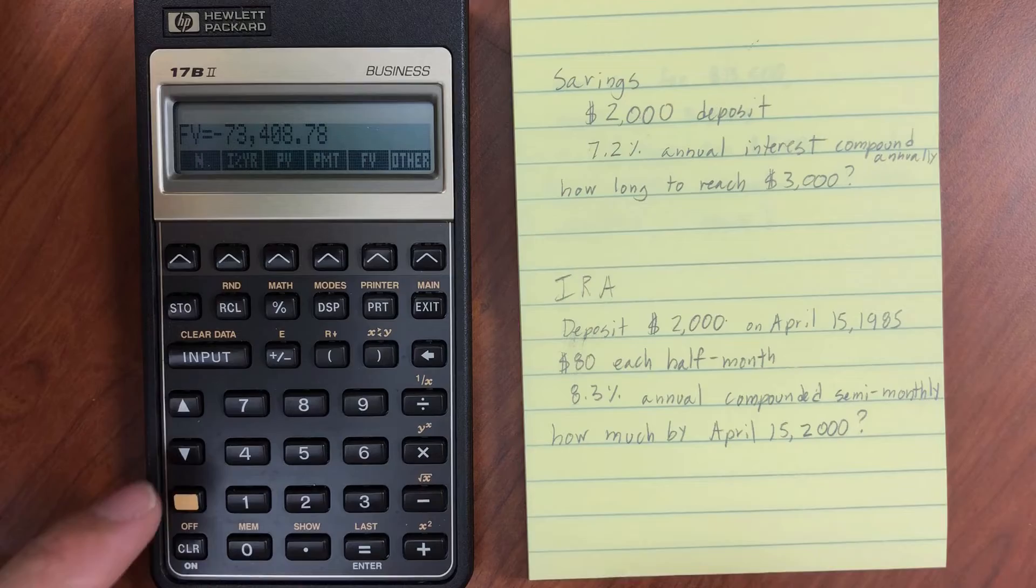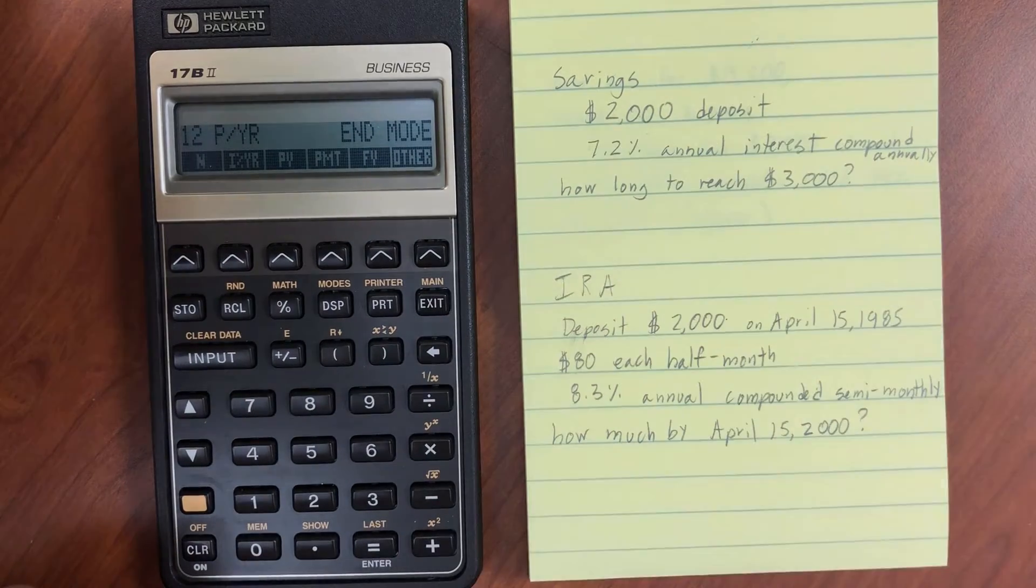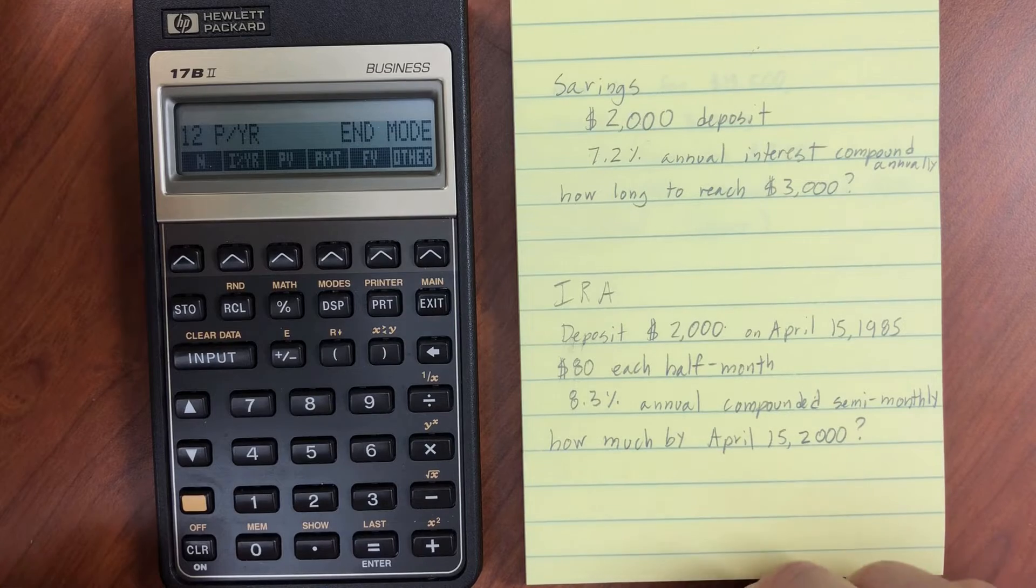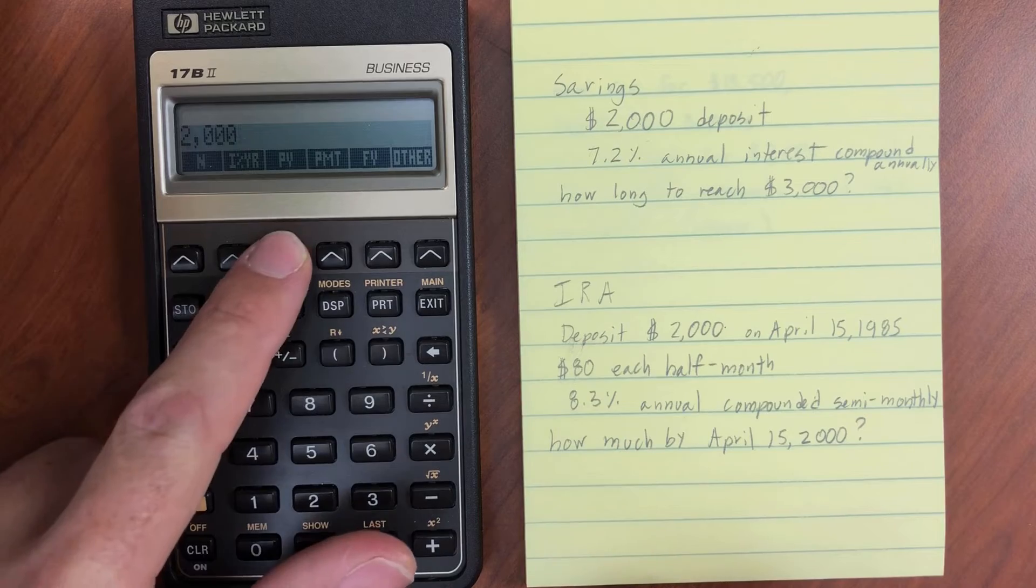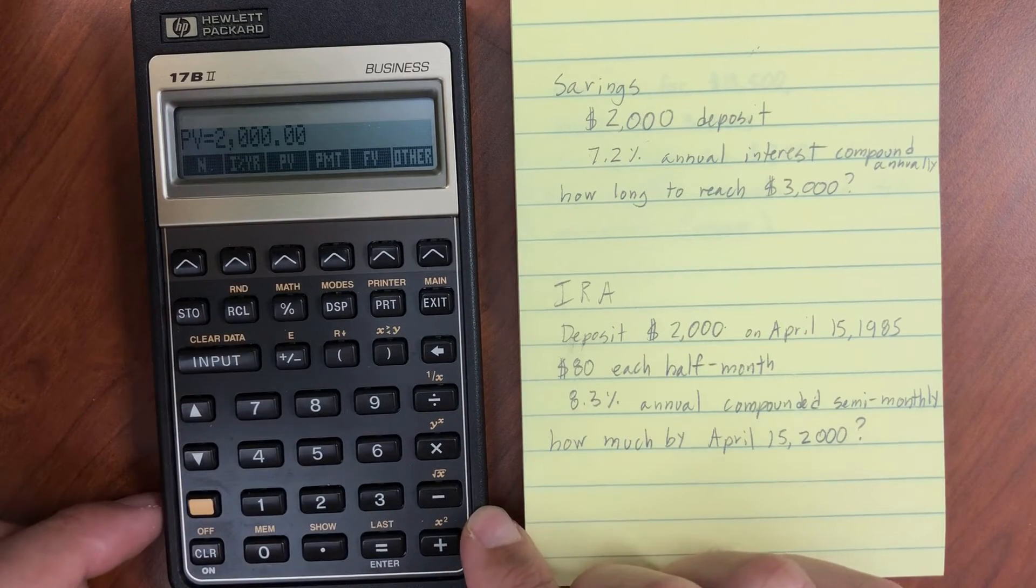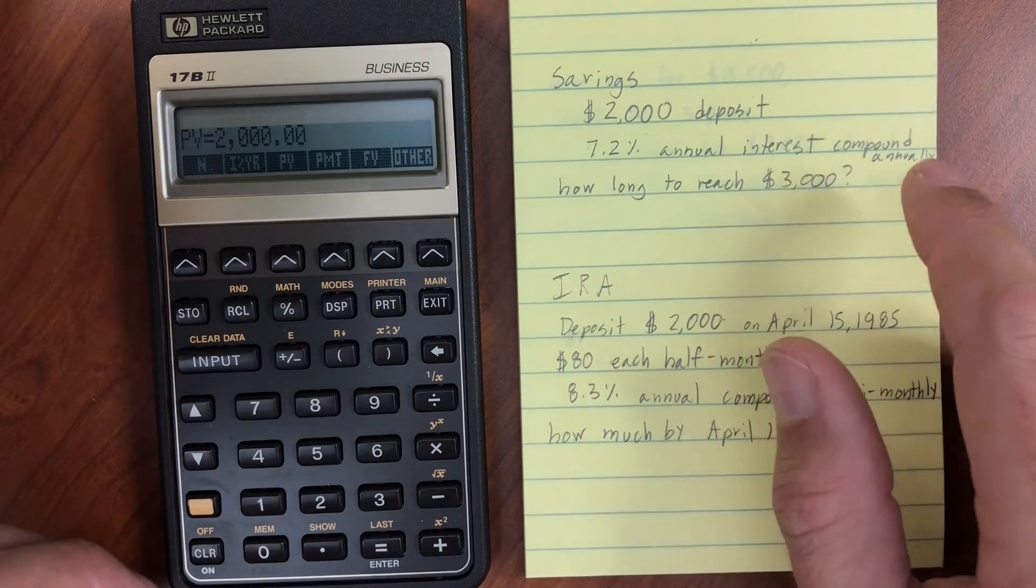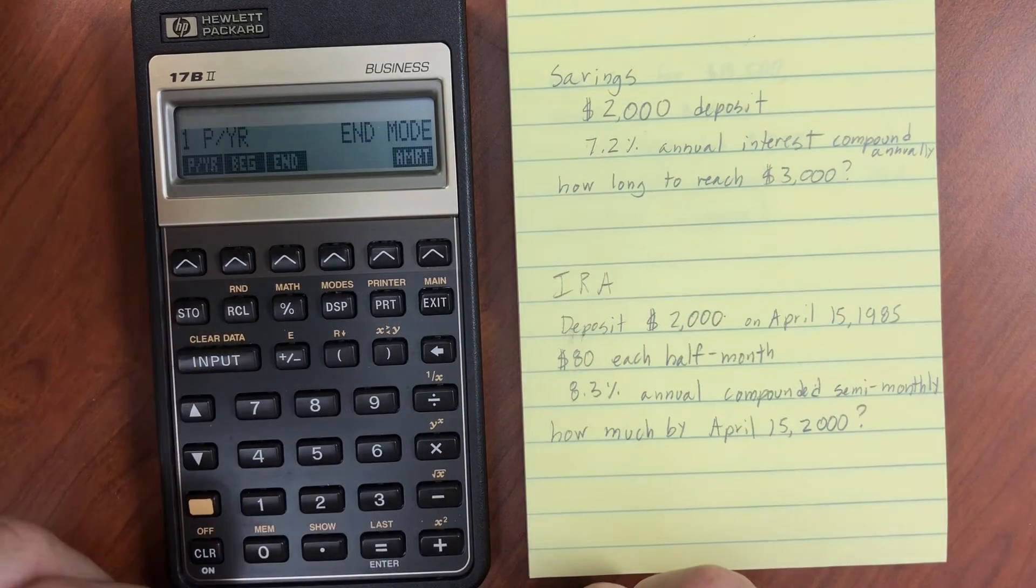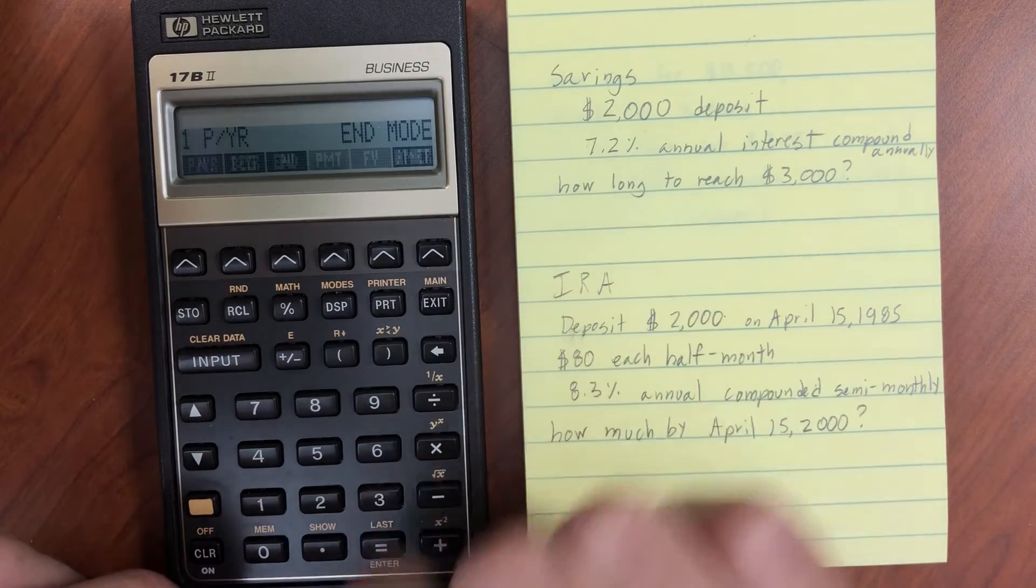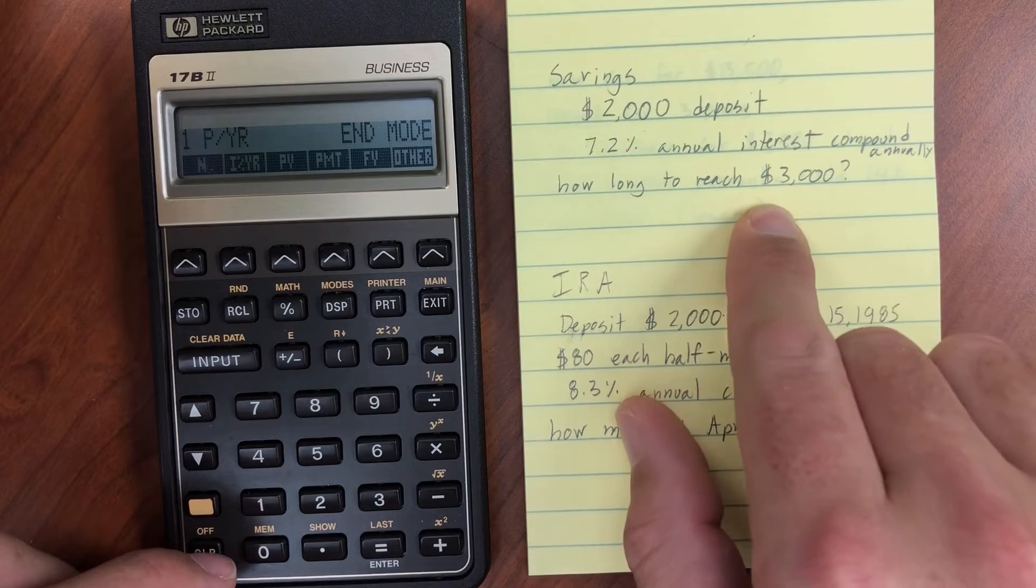We've got another example. Let's go ahead and clear our data. We have a savings account. This is going to be more encouraging. So $2,000 is our initial deposit. That's our present value. We have 7.2% annual interest. And it compounds annually. So we're going to have to go into other and change it to one period per year.